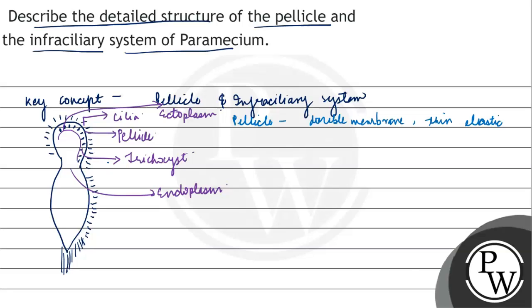Then, we will mention about infraciliary structure. So basically infraciliary ki baat karein to pellicles jo hote hain vo alveoli form karte hain - hexagonal depressions ko form karte hain jahan se hamari ciliary region originate karti hai, right? This is alveolar region. To alveolar region bhi jo hai in mein do membrane payi jaati hai, right? It comprises of two - it is double membrane.